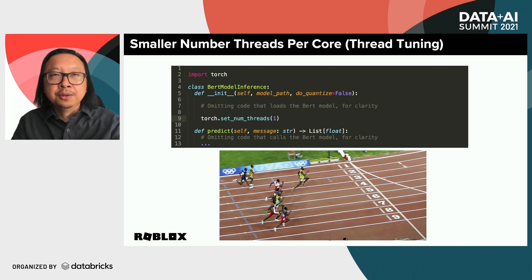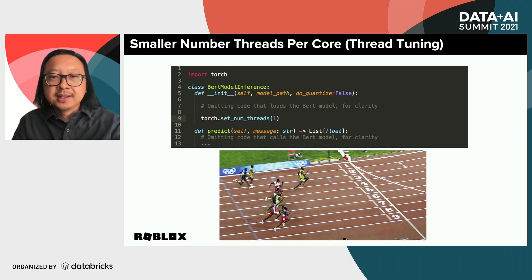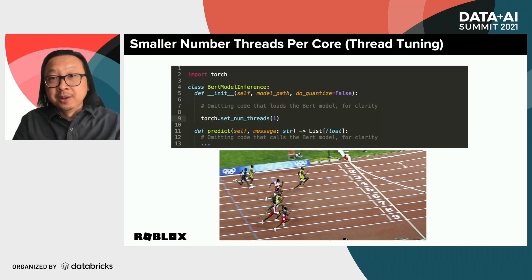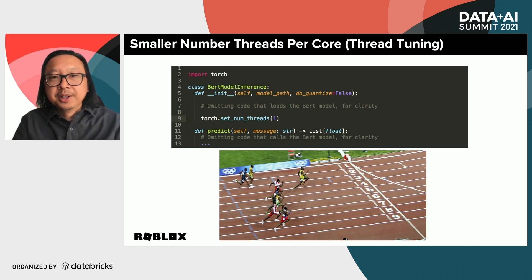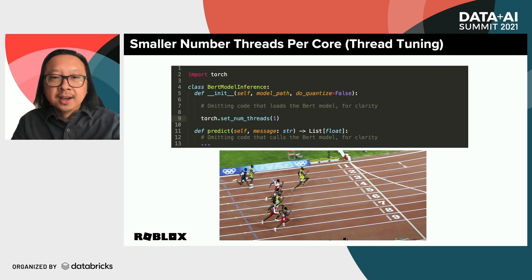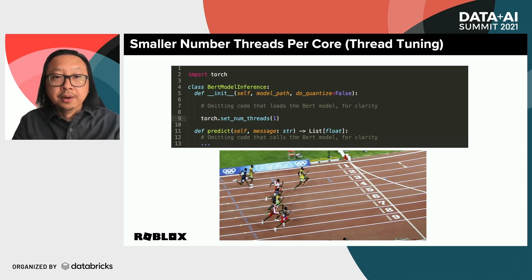The critical thread tuning is shown on line nine. When you have lots of processes running a BERT model on the same machine — which is almost always the case at high scale — you want all those processes to play nice with each other in a CPU setting. We did better by limiting thread parallelism for each process, in particular limiting each process to just one thread.